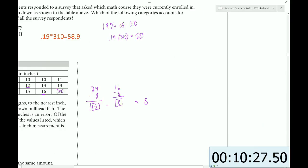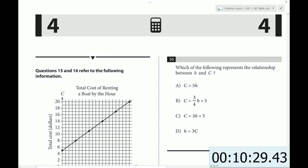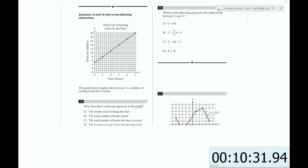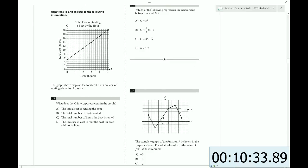On to problem 15. The graph above displays the cost in dollars of renting a boat for each hour. What does the C represent in the graph? Let's see. Well, C is the total cost in dollars, right? Because that's the label of the y-axis. So it's the total cost.